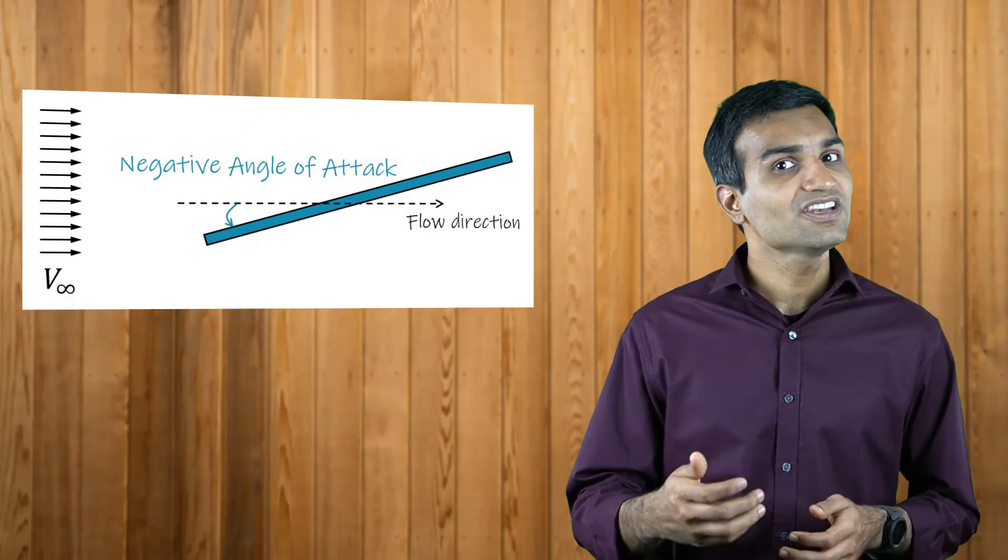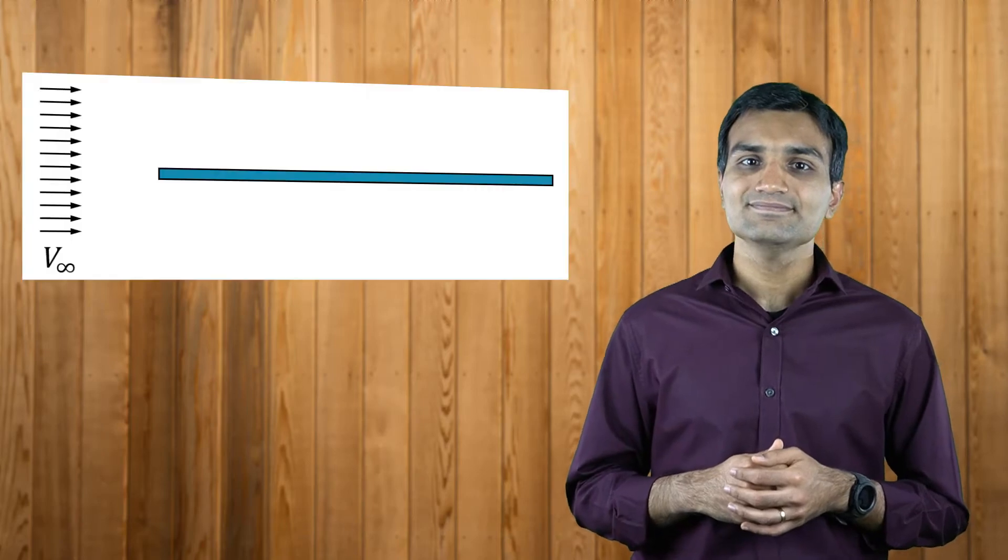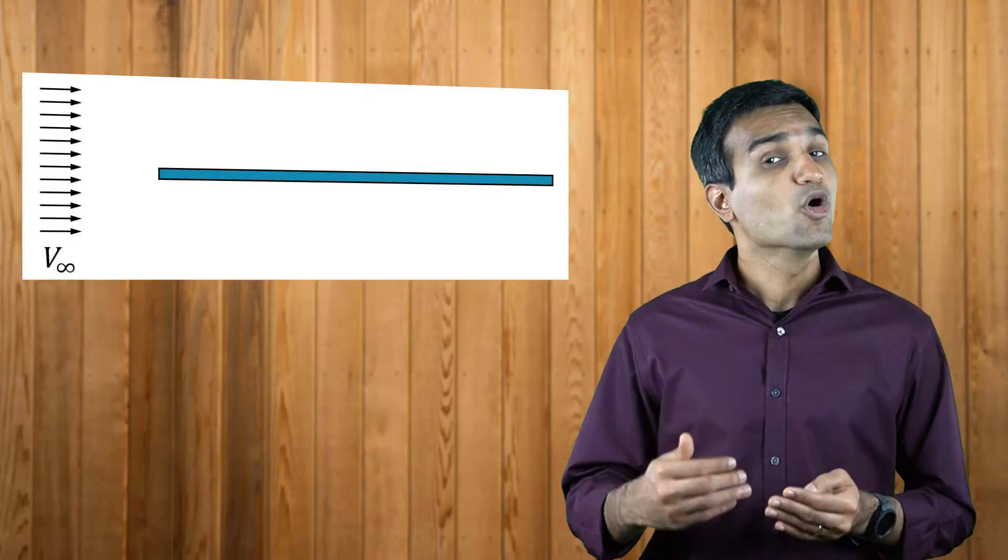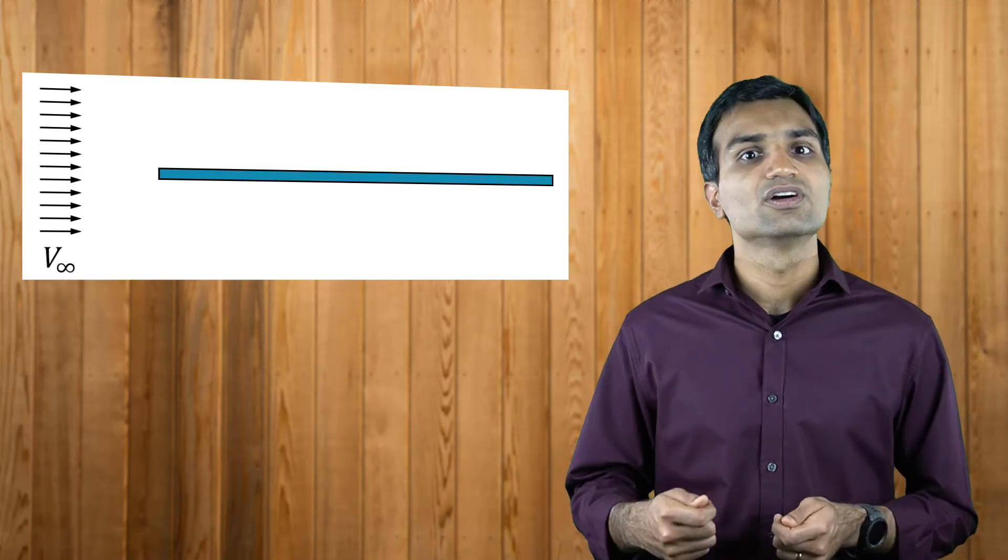A flat plate with a positive angle of attack can generate lift. However, it would be a poor choice given the flow separation near the trailing edge. Airfoils, which are more streamlined than flat plates, are typically used to generate lift in airplanes.